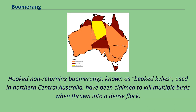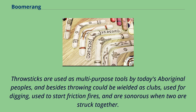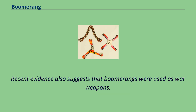Hooked non-returning boomerangs, known as beaked kylies, used in northern central Australia, have been claimed to kill multiple birds when thrown into a dense flock. Throwsticks are used as multipurpose tools by today's Aboriginal peoples, and besides throwing could be wielded as clubs, used for digging, used to start friction fires, and are sonorous when two are struck together. Recent evidence also suggests that boomerangs were used as war weapons.